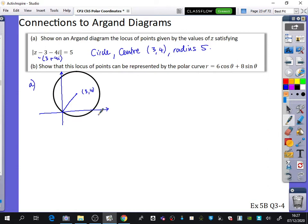Now we're just going to connect this back together. That's just revision, right? That's just stuff from year one. Then it wants you to show that the locus of this point can be represented by the polar curve. So we have r equals six cos theta plus eight sine theta. What we're going to do is we're going to go from the Argand to Cartesian, and then we're going to go to polar. And that's it.